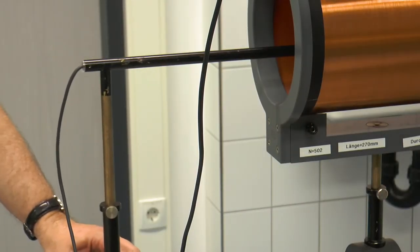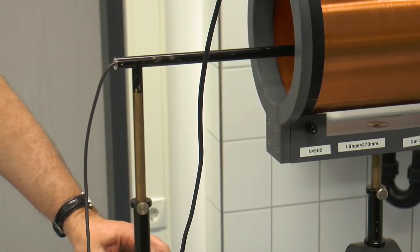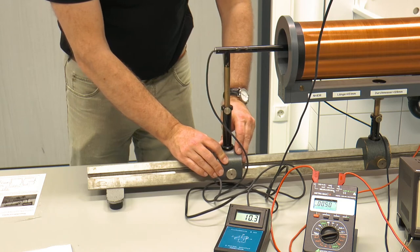The hall probe is used to measure the magnetic field of the two air coils and the Helmholtz coil depending on their position on the longitudinal axis. The step size is 1 cm.